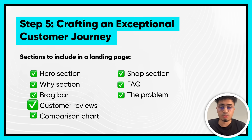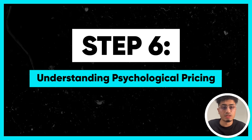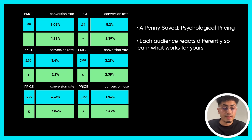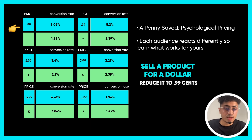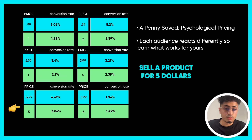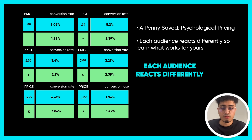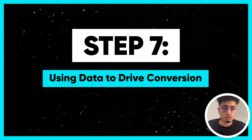Step five: crafting an exceptional customer journey. Essential elements you need on your landing page: a hero section, a why section, a brag bar, customer reviews, a comparison chart, a shop section, frequently asked questions, and the problem. Step six: understanding psychological pricing tactics. If you sell a product for $1.00 and reduce it to $0.99, conversion rate goes from 1.88% to 3.06%. If a product is priced at $5.00 and you reduce it to $4.99, conversion rate goes from 3.84% to 4.67%. Each audience reacts differently, so test what works for your business.